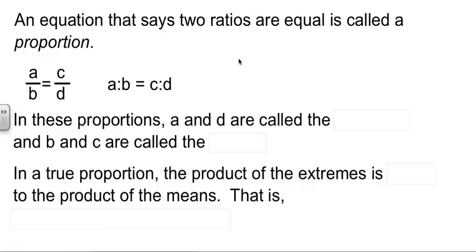Proportions we can typically write two ways. A over B equals C over D. Or if you want to write it in a little more compact form, you can write it A to B equals C to D. In both of these proportions, A and D are called the extremes, because they're on the extreme outside. B and C are called the means, because somebody decided to call them the means. Really couldn't tell you why they chose it.